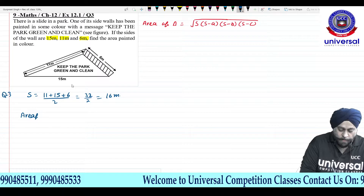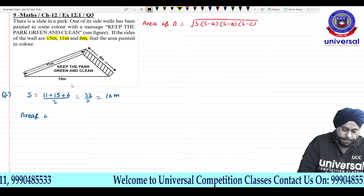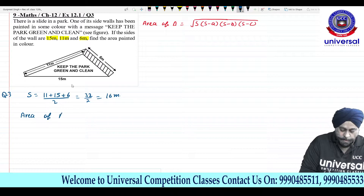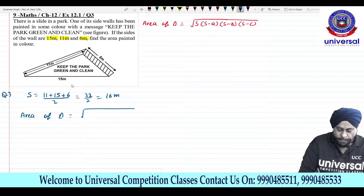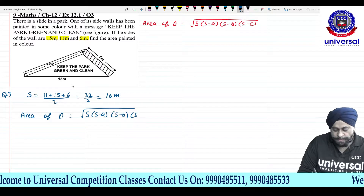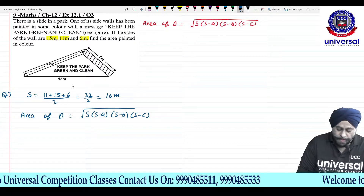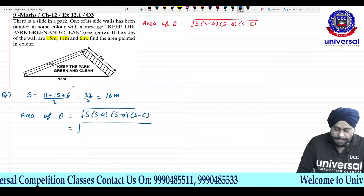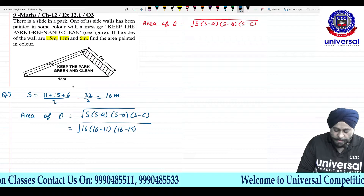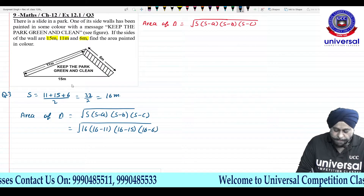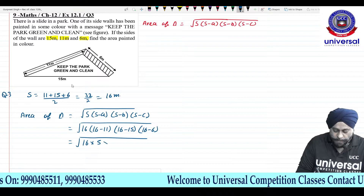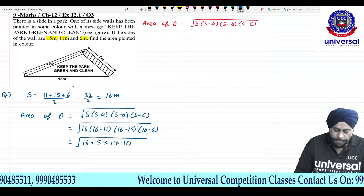Area of triangle using Heron's formula: under root of S(S−A)(S−B)(S−C). Substituting: S is 16, so we get 16 minus 11, 16 minus 15, and 16 minus 6. This comes out to be under root of 16 into 5 into 1 into 10.